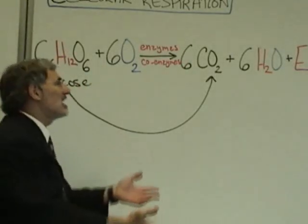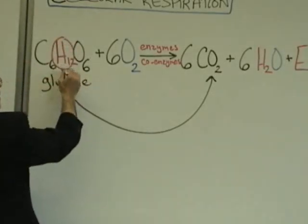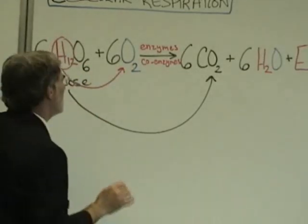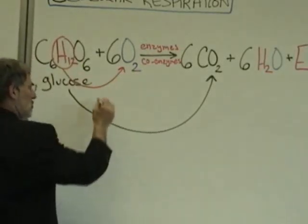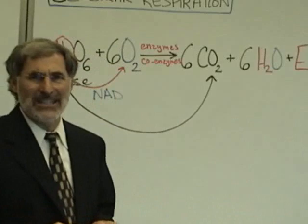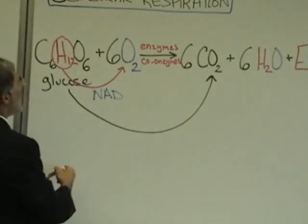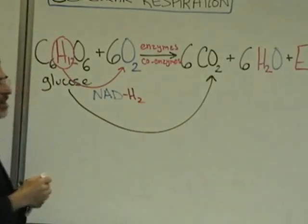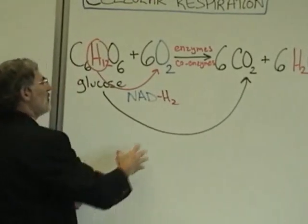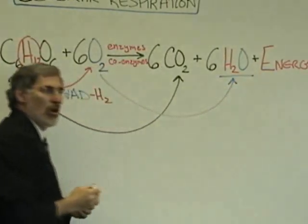Living things take in oxygen, and the hydrogen atoms released from breaking apart the sugar molecule are transferred to oxygen atoms. A very important coenzyme involved in the transfer of these hydrogen atoms onto oxygen is a coenzyme called NAD — nicotinamide adenine dinucleotide. It transfers hydrogen atoms and electrons two at a time from the sugar molecule to oxygen, and when hydrogen atoms are transferred onto oxygen, you end up with H2O, water.